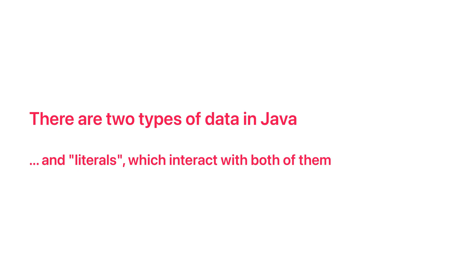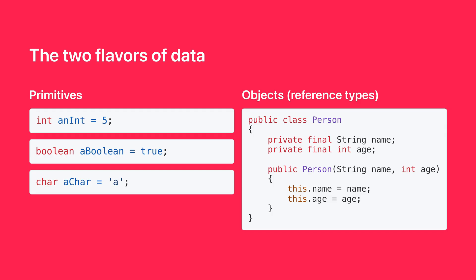To get to the bottom of this, we need to understand the two types of data in Java, and literals which interact with both of them. Data comes in two flavors: primitives and objects. This distinction is crucial for understanding why some things in Java work the way they do, especially when it comes to comparing values.